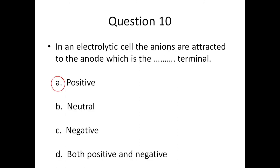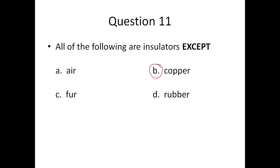Question ten: the answer is A. In an electrolytic cell, the anions are attracted to the anode, which is the positive terminal. Question eleven: all of the following are insulators except copper, because copper is a metal. So your answer is B. All the rest are insulators.